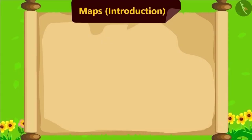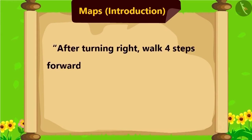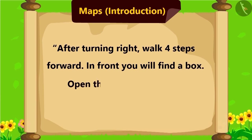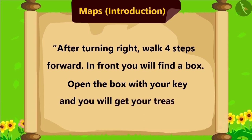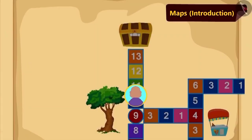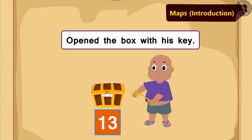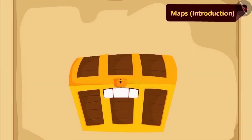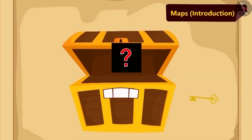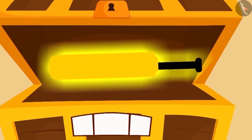This was written further in the instructions: after turning right, walk four steps forward. In the front, you will find a box — open it with your key and you will get your treasure. As per the instructions, Bablu reached near the box and opened it with his key. Children, do you know what Bablu got in the treasure? Bablu got a new cricket bat in the treasure.